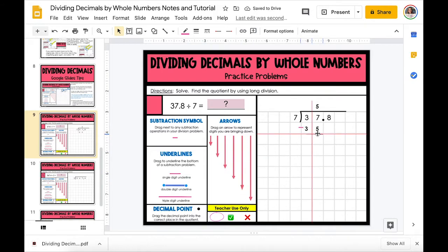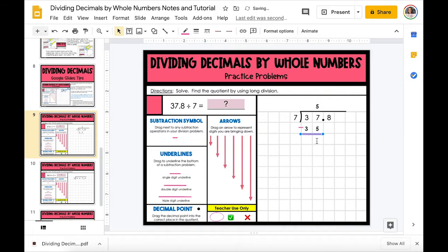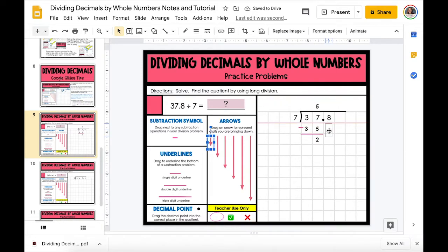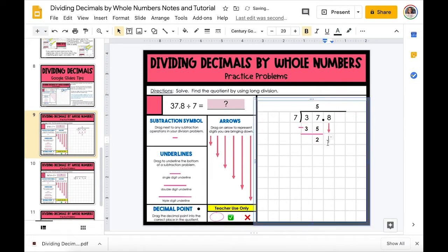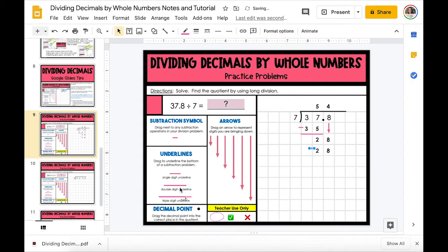which is 35 with a remainder of two. The next thing we're going to do is bring down our eight using one of the arrows so that we have 28, and 28 can divide by seven four times exactly, which is 28.